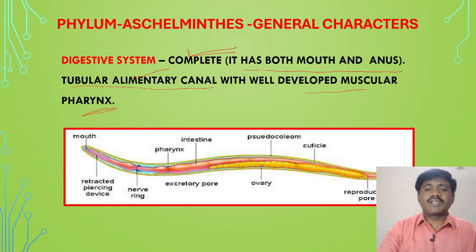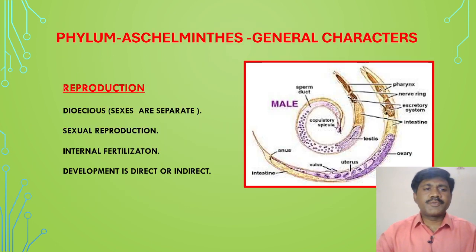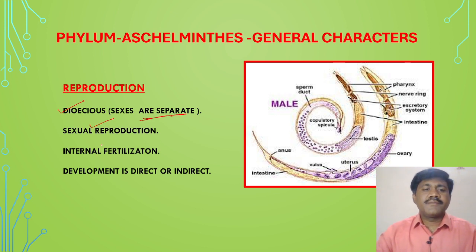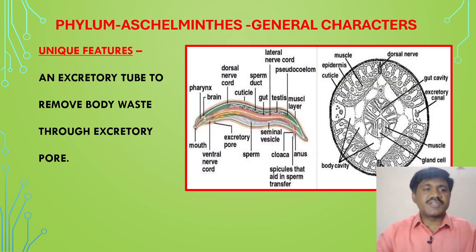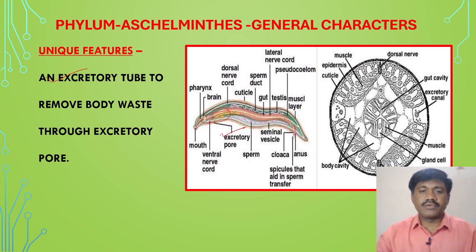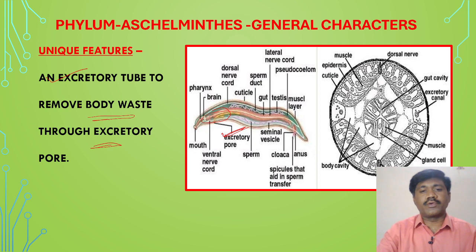Reproduction: sexes are separate — dioecious — with male and female organisms separate. Sexual reproduction is present and internal fertilization occurs inside the body. Development is direct, or in some animals indirect. A unique feature is the presence of an excretory tube, which opens out through an excretory pore. This tube removes body waste through the excretory pore — that is an important and unique characteristic feature.